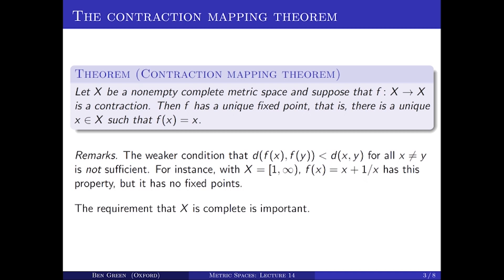It's also important that X is a complete metric space, otherwise this theorem will fail. For instance, if I take the open interval (0,1), which is not complete, and the map F(x) equals x over 2 — well, that's certainly a contraction, but it has no fixed points in that space.